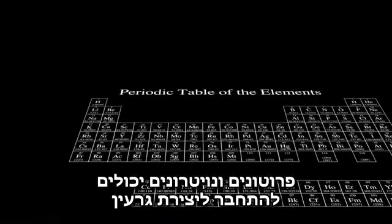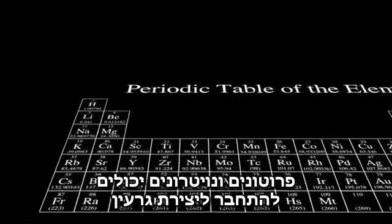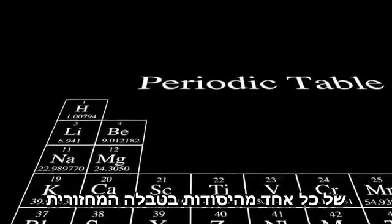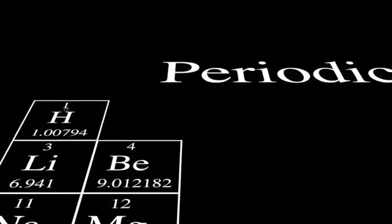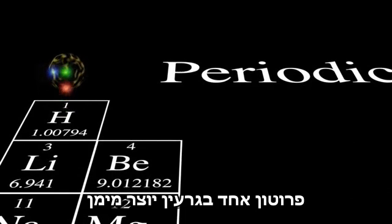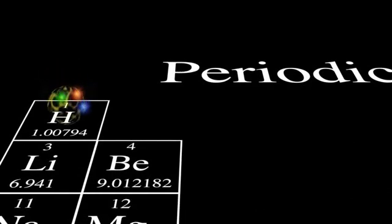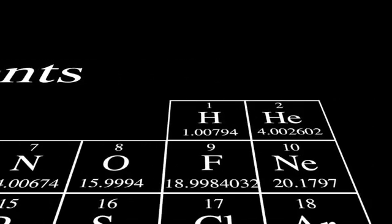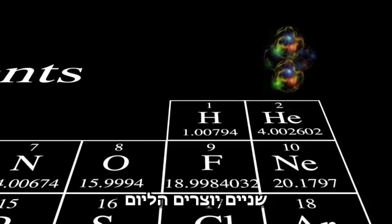These protons and neutrons can then combine to form the nucleus of each element in the periodic table. One proton in the nucleus makes hydrogen. Two form helium.